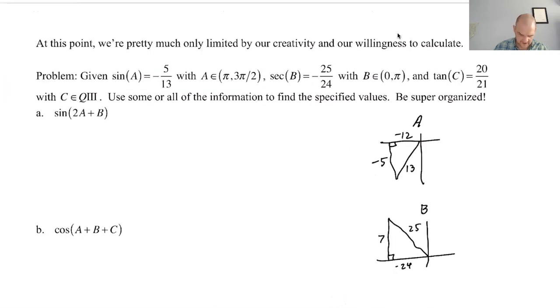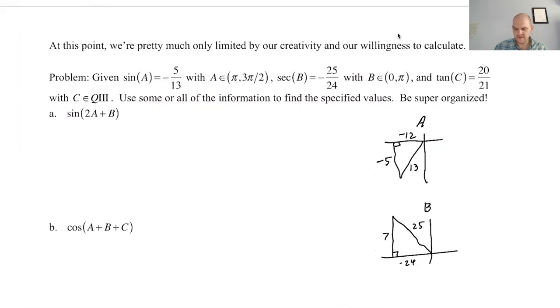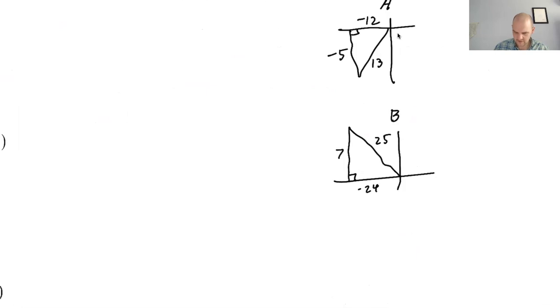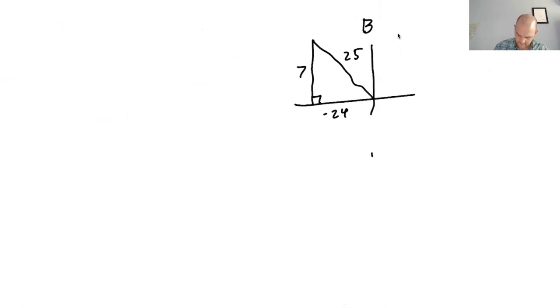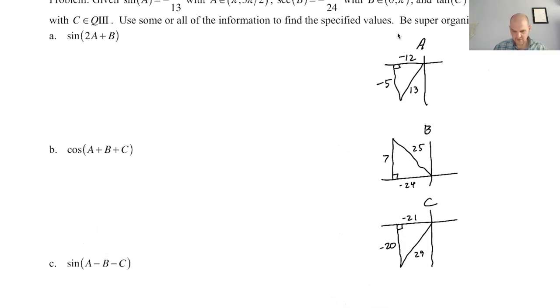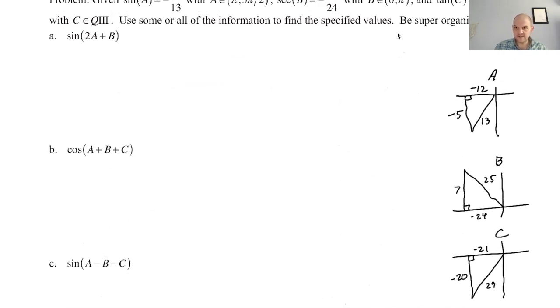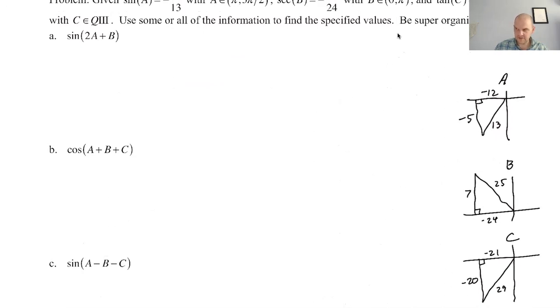And then c, where is c? C is in quadrant 3. So tangent is 20 over 21. So quadrant 3 tangent is 20 over 21. 20, 21, but that's wrong because quadrant 3, everything's negative. And then this'll be 29. I know that one because it's my favorite one. So these are our triangles.